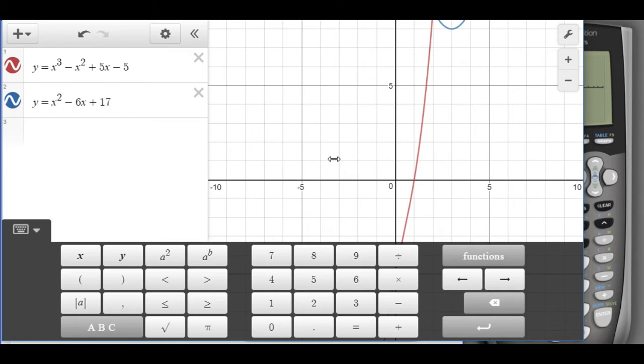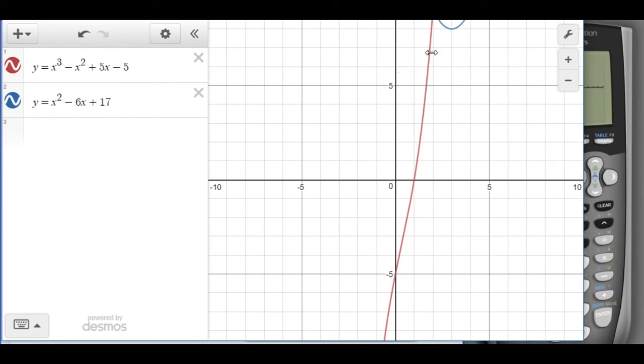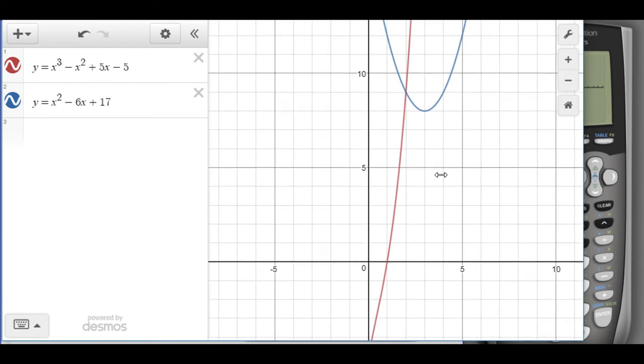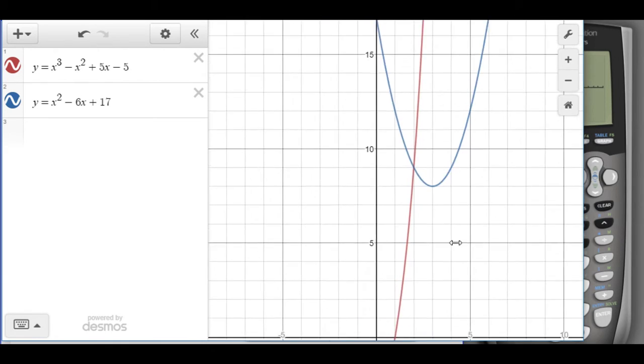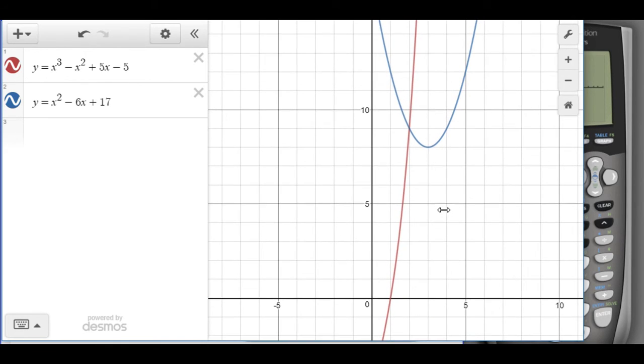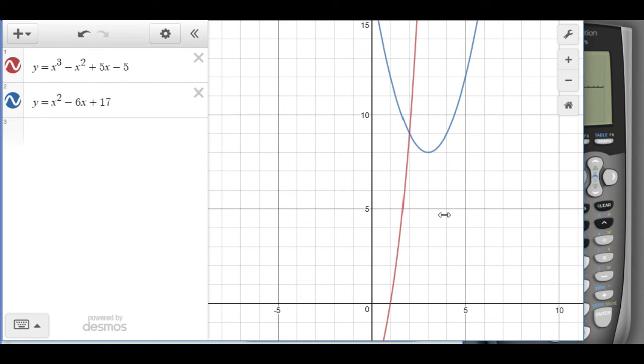If I click on the graph area, it's very hard to see where the intersection is. What Desmos lets you do is if I click in the graph area and then scroll up, I can actually move my window around. Now I see a much clearer idea of where they're intersecting.